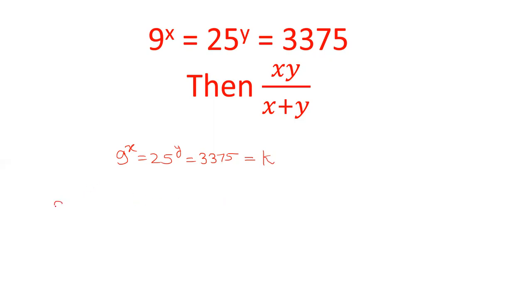So, 9 power x is equal to k. So, 9 can be written as k power 1 upon 2x. 25 power y ko bhi k ke berabar agar likte hai. 5 power 2y ho ga. 5 ki value k power 1 upon 2y ho jayegi.